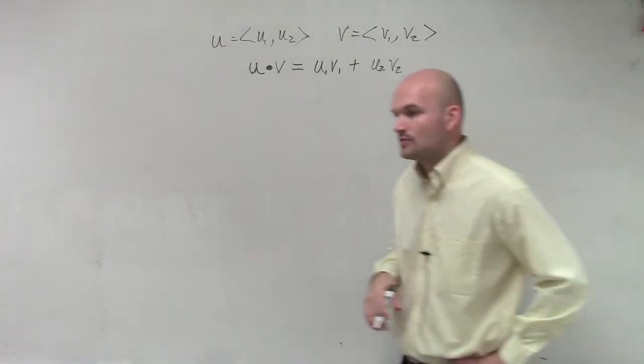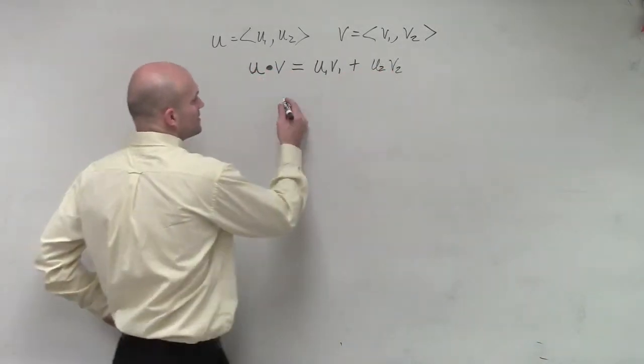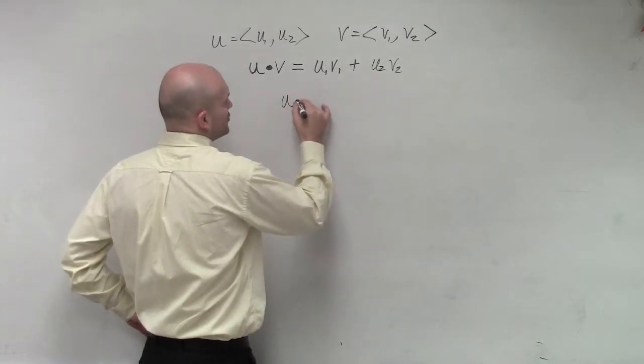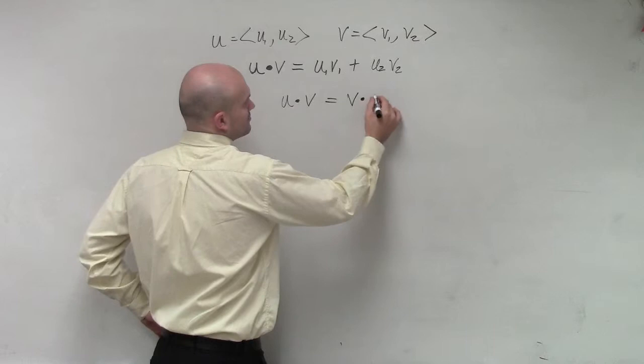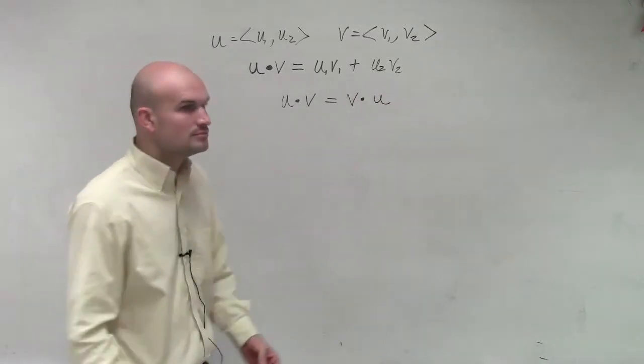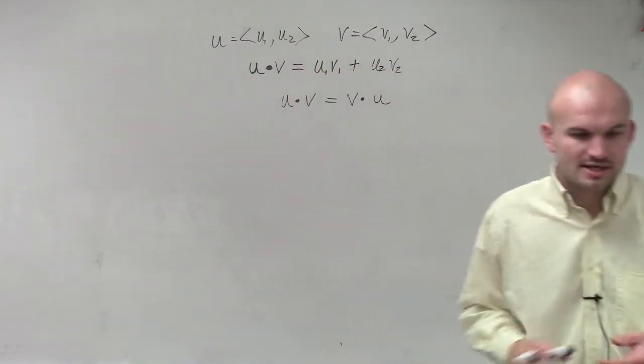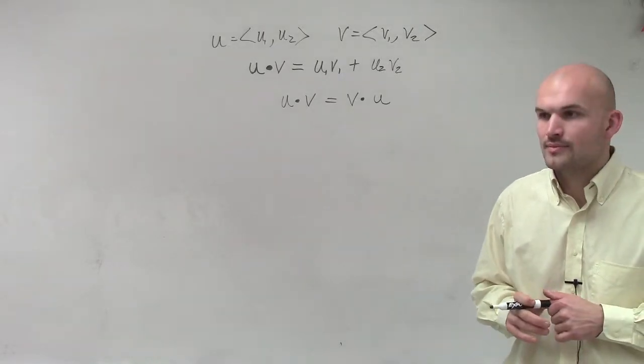Then let's just go through the properties of the dot product. What the properties state is if I do u dot v, that's equal to v dot u. So these are your properties that you can work with.